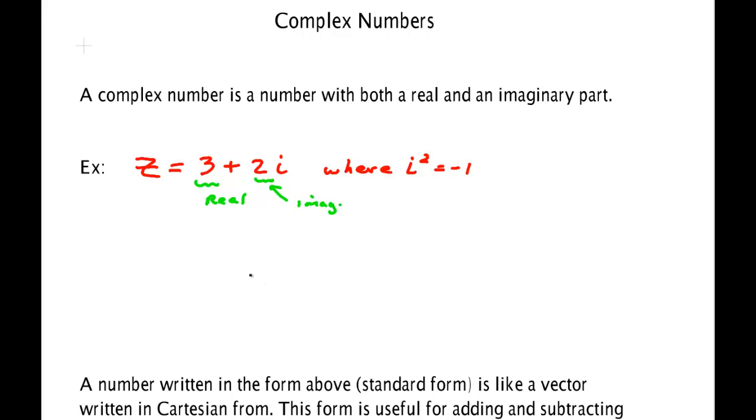Now, one can plot such a point on an axis where there is a real axis along x and an imaginary part is plotted on y. And if one does that, then one could go 1, 2, 3 units along the real part and 1, 2 units on the imaginary part. And this point here whose coordinates are 3, 2 is in fact the number z.